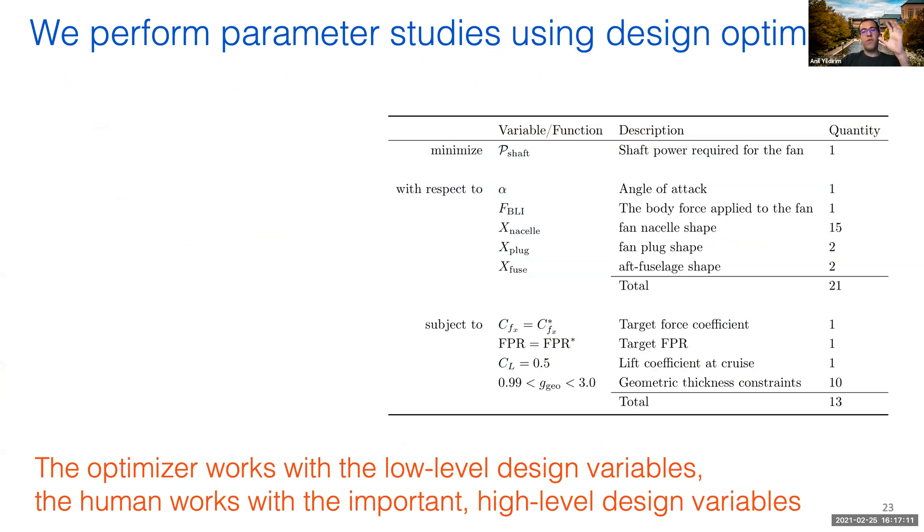In this work, we focused on the aft propulsor design. This is because modeling the entire propulsion system of a configuration this size is extremely challenging. To sidestep this challenge, we just optimize the design of the BLI fan and perform a parameter sweep with important design parameters. In this context, we deviated from the push-button solution I introduced earlier, and we're now using design optimization as a tool we can practically incorporate in existing design approaches. This table on the right shows the optimization problem formulation. We have an objective function, design variables, and constraints. I'll introduce the meaning of each term here.